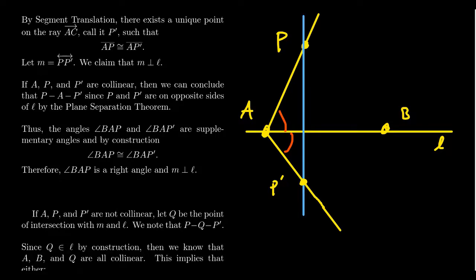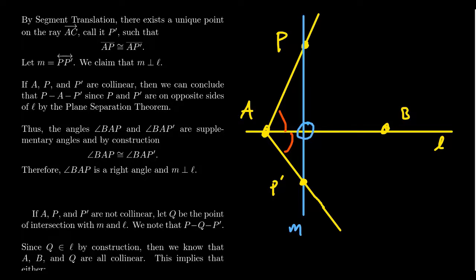The new line we constructed is called M — the line determined by P and P prime. By construction it contains the point P. We don't yet claim it's perpendicular to L; we have to prove that. We need to first argue that M and L actually intersect. There are a couple of cases to consider.